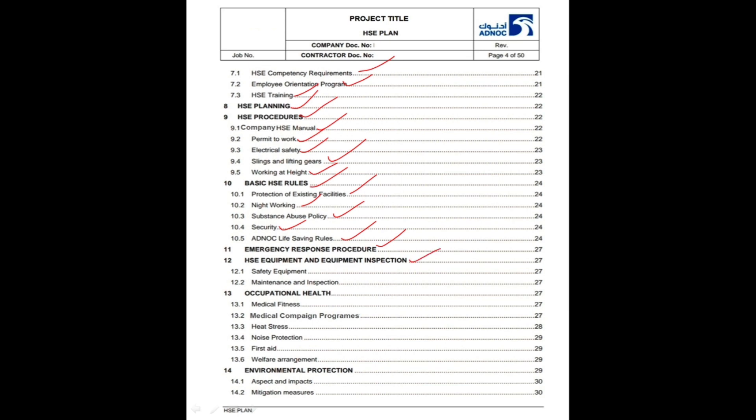HSC Equipment and Equipment Inspection. In this section, safety equipment like fire extinguishers and first aid kits will be explained. Inspection schedules and maintenance and inspection of plant and equipment schedules will also be explained in this section.